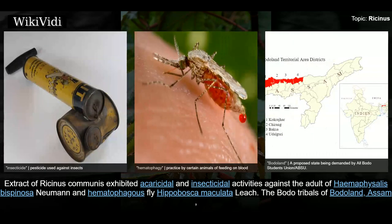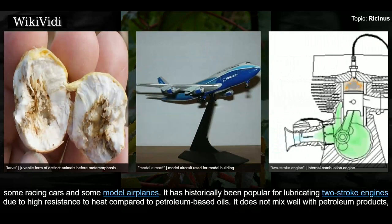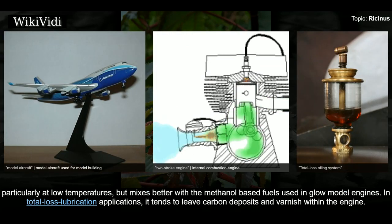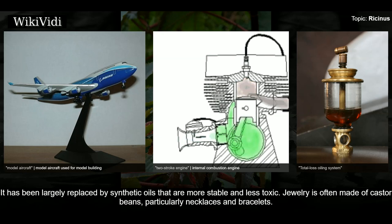Extract of Ricinus communis exhibited acaricidal and insecticidal activities against adult Haemaphysalis bispinosa and the haematophagous fly Hippobosca maculata. The Bodo tribals of Bodoland, Assam, use the leaves of this plant to feed and rear the larvae of muga and endi silkworms. Castor oil is an effective motor lubricant and has been used in internal combustion engines, including those of World War One airplanes, some racing cars, and some model airplanes. It has historically been popular for lubricating two-stroke engines due to its high resistance to heat compared to petroleum-based oils, though it does not mix well with petroleum products.